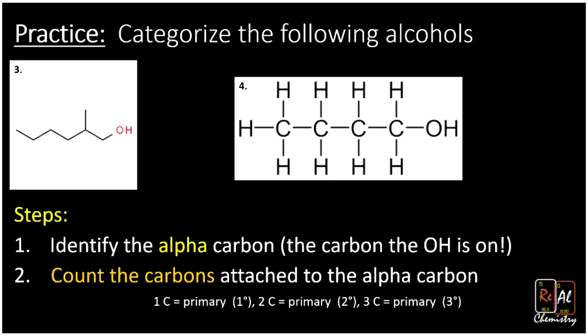In alcohol number three, we identify the alpha carbon as usual — right there. Now we identify the carbons connected to it. Some might want to grab a carbon that's two bonds away, but that doesn't count — only directly bonded carbons count. We have just one carbon connected to the alpha carbon, making this a primary alcohol.